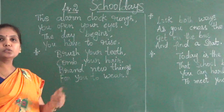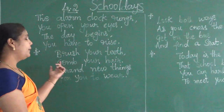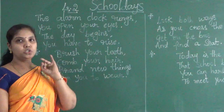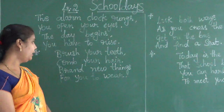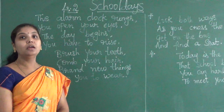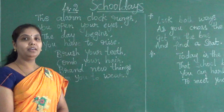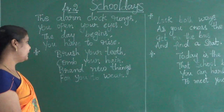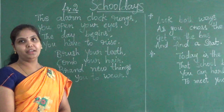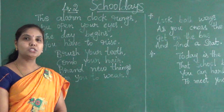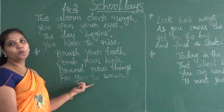What does it mean to get ready for school? First you have to brush your teeth, then wash your face, then have your bath, then comb your hair. You have to wear a proper, neat and clean uniform. Then you have to eat a healthy breakfast. After eating breakfast, you have to take your lunch box, water bottle, and school bag. Then you are ready to go to school.